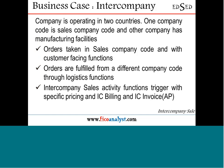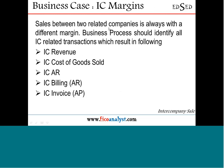Looking at the business case: a company is operating in two countries. One company code is the sales company code and another has a production/logistical capability. Orders are taken in the sales company code and fulfilled from a different company code. The inter-company sales activity functions together with specific pricing, inter-company billing, IC revenue, inter-company cost of goods sold, and inter-company accounts payable.